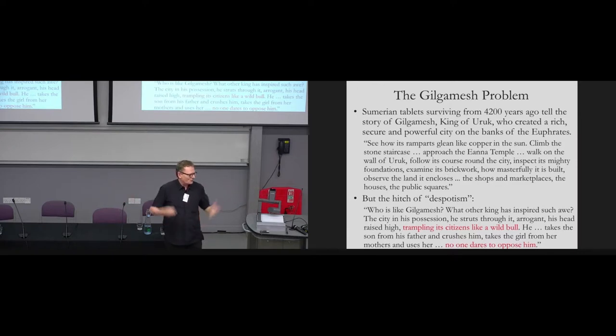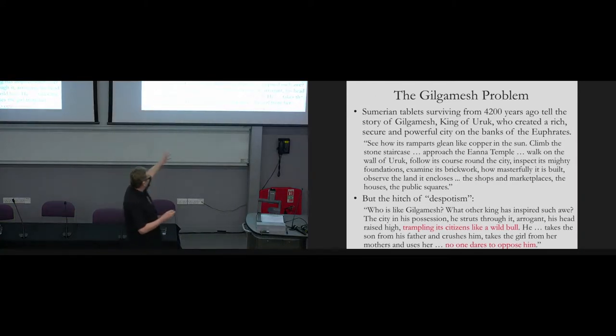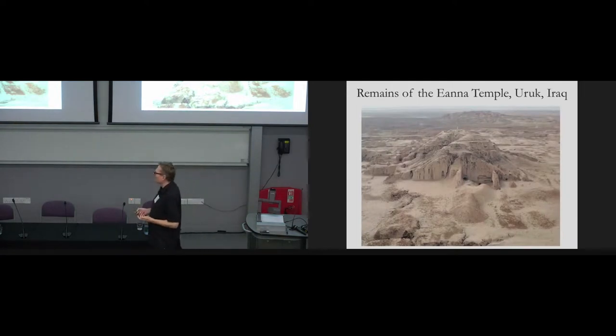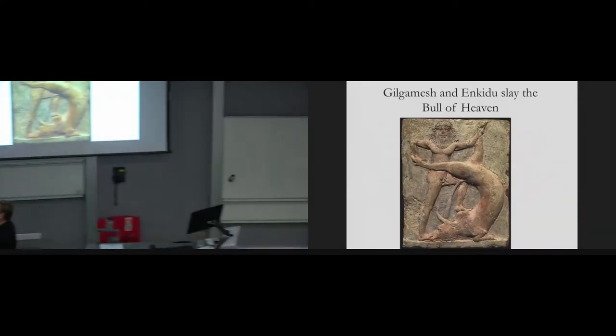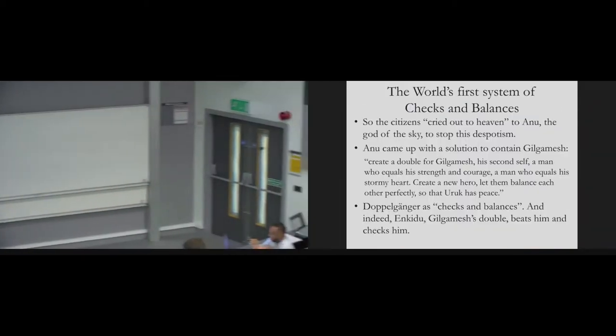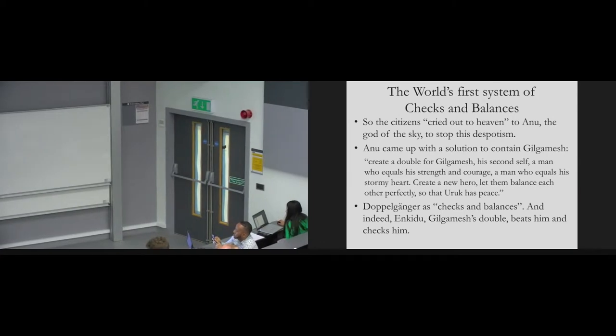I want to criticize this constitutional design approach by telling you about the world's first system of checks and balances. You probably thought Locke, maybe Montesquieu, did the Athenians have that? Old news. You have to go back 4,200 years to the city of Uruk. There's a famous epic, the epic of Gilgamesh. Gilgamesh was the king of Uruk.